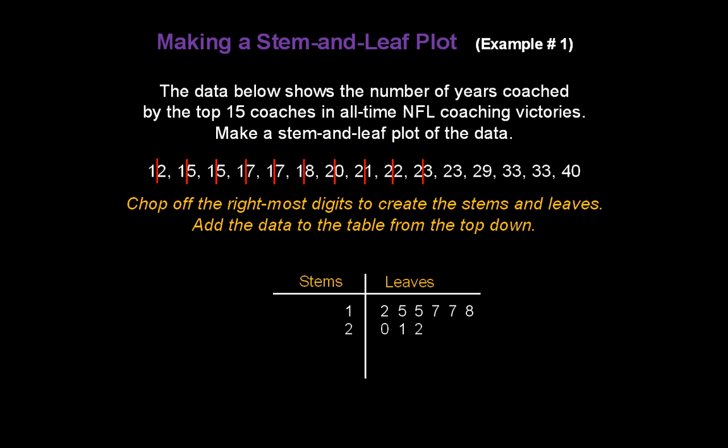Break 23 down. 3 in the leaf. We have a second 23, so we write a second 3 in the leaves for 2. And we have a 29, our last 20, our last stem of 2. And we put another 9 in the leaf.